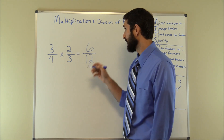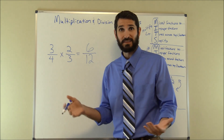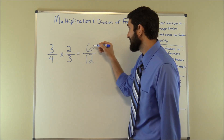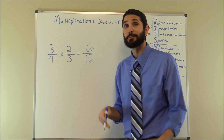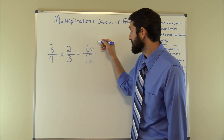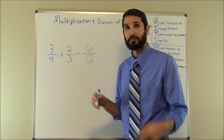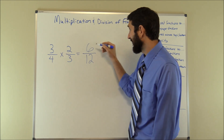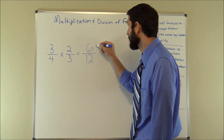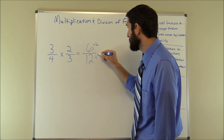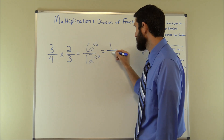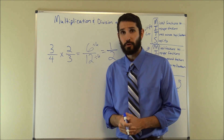We have six over twelve, and our final step is S for simplify. We ask: is there a number we can divide both the top and bottom by? We could divide by two, or by three. But six will go into six one time and six will go into twelve two times, so six is our greatest common factor. Six divided by six is one, and twelve divided by six is two. Our answer is one half.